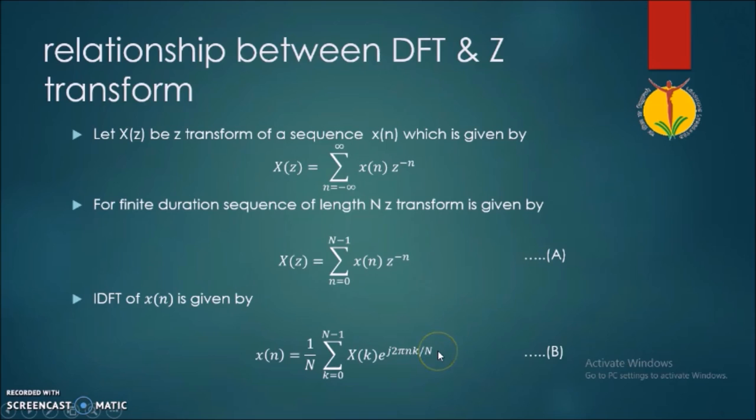So now to get the relationship between the DFT and the Z transform, we have to substitute the value of X(n) from this step.